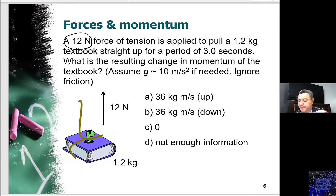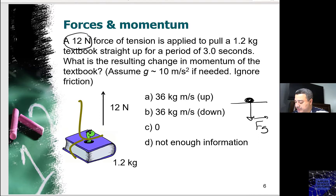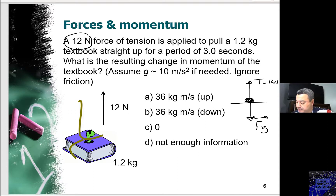We need to see if this book is going to see any change in momentum or not. Before we do this, it's important to know what forces are applied on this book. In this case, we have the gravitational force Fg and the tension force T, which equals 12 Newtons. It's important to understand what forces are being applied on that object.